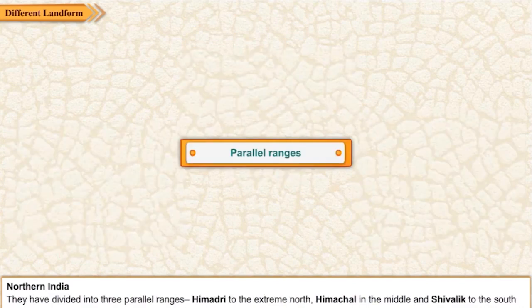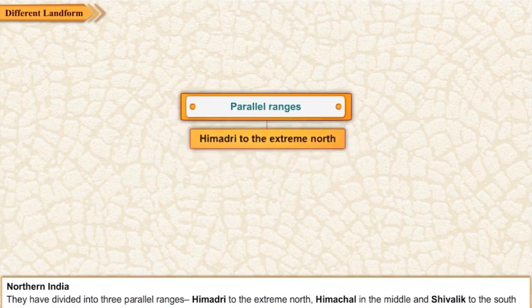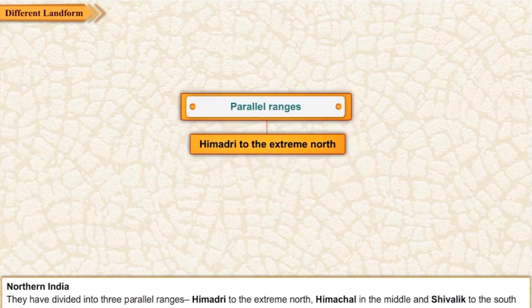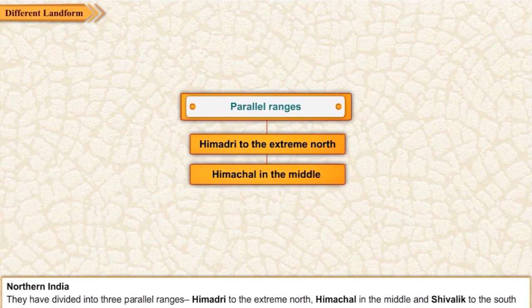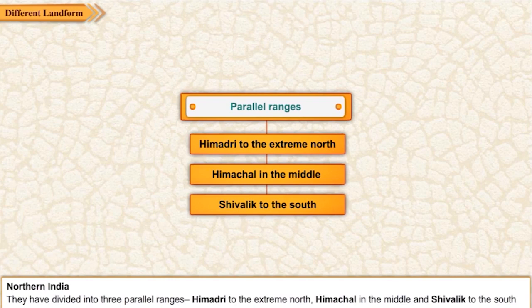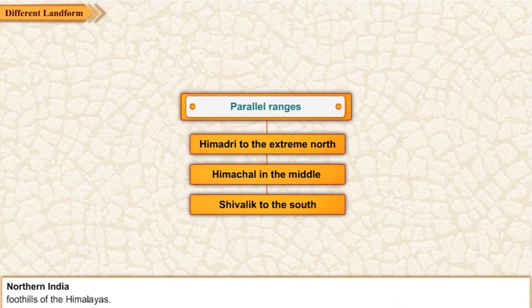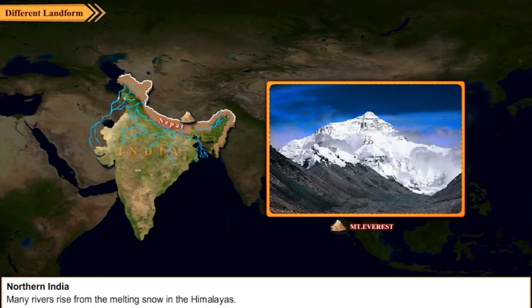The Himalayas are divided into three parallel ranges: Himadri to the extreme north, Himachal in the middle, and Shivalik to the south, also known as the foothills of the Himalayas. Many rivers rise from the melting snow in the Himalayas.